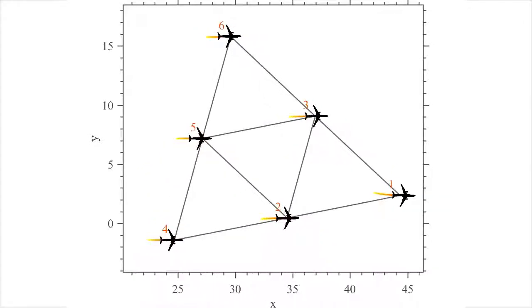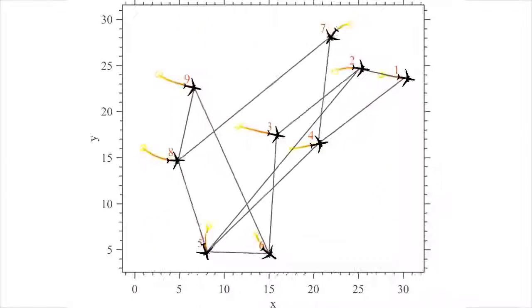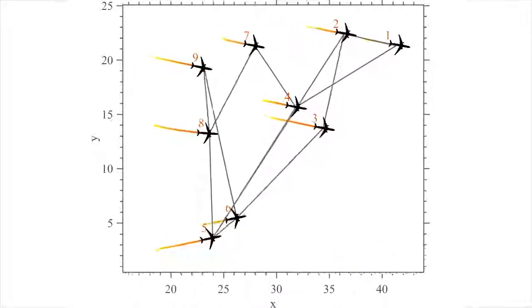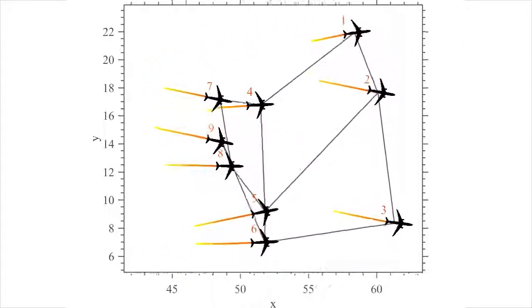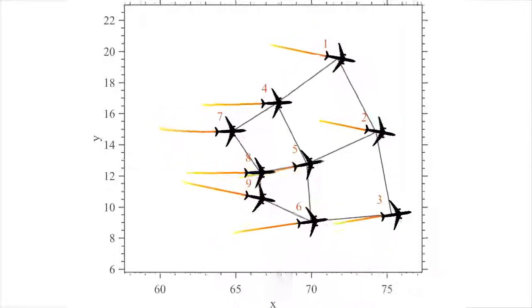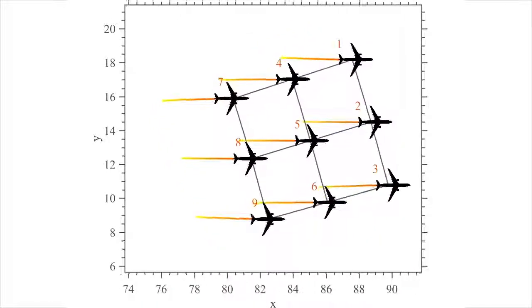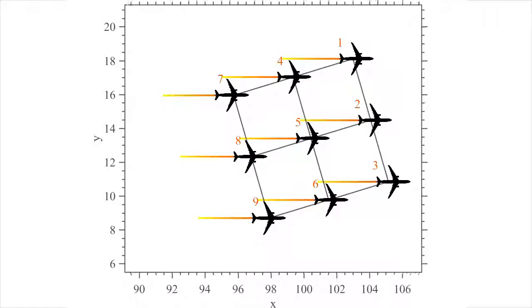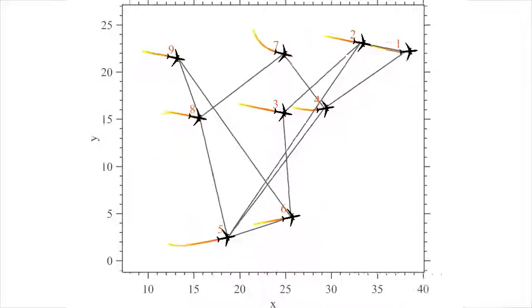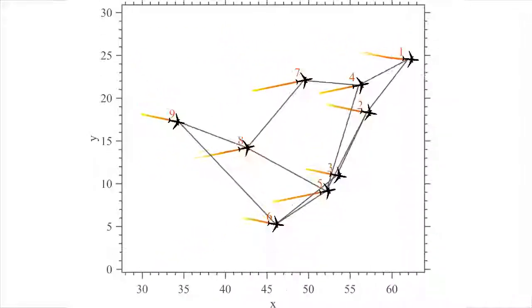In the second set of simulations, we consider nine agents and a square grid desired formation. As can be seen, UAVs achieve the desired formation. By using the modified control, the scale of the resulting formation can further be fixed.